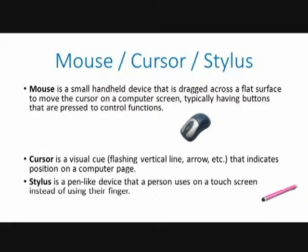Everybody knows what a mouse is — it's that electronic device that attaches to your computer. Then we have the cursor, which is that little flashing dot that you need to locate on your screen to do what you want to do. Then we have the pointer. Typically when you move your mouse around, there is an arrow that appears — that's how you find where you want to go. You put that arrow where you want to go, then click on it, and that gives you your cursor.